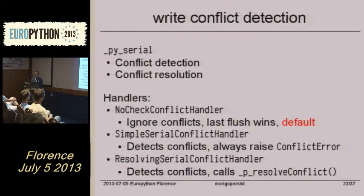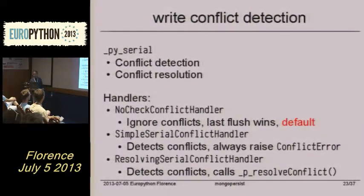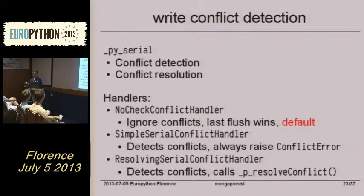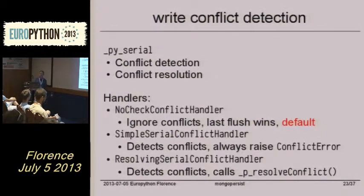Then the simple serial conflict handler, which will detect changes by comparing that serial number and will always raise a conflict error. And the third, the resolving serial conflict handler, which will again detect the conflict and will call each object's _p_resolve_conflict method to allow the object to resolve the conflict itself.